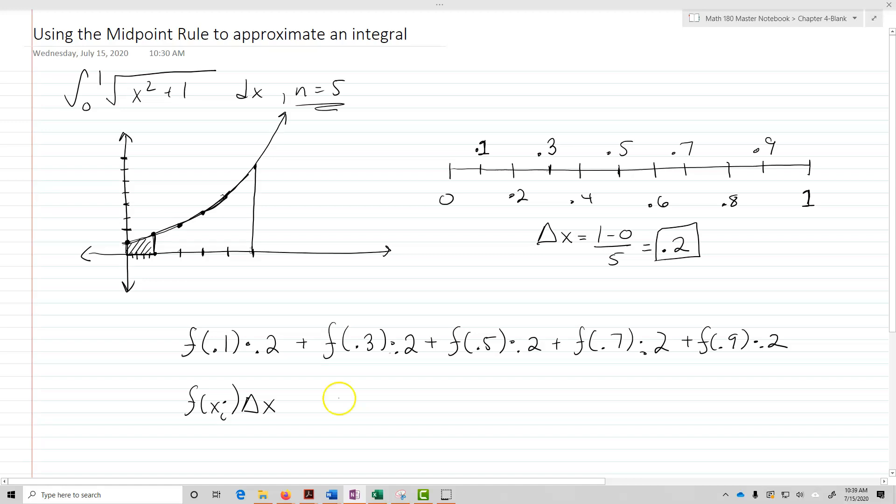So just remembering that f of x is our function x squared, the square root of x squared plus 1. What we end up with when we take this sum is we're going to end up with 5.7331, or approximately 5.7331.